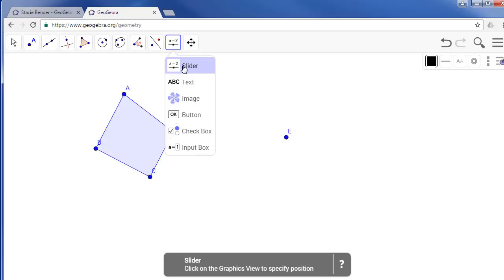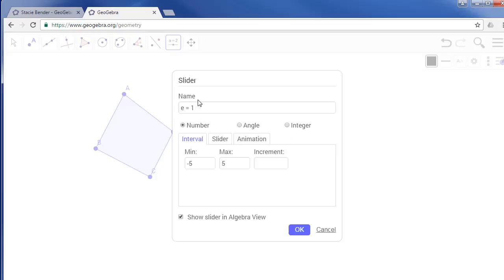Choose the slider tool and create a slider. We'll name this K since that was our scale factor or dilation value and the min will be zero and the max will be three and the increment will be 0.05 and then click OK.